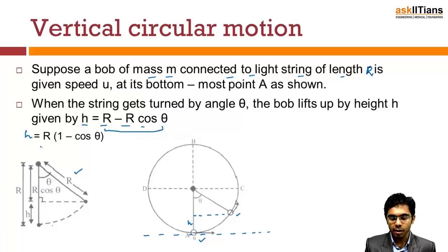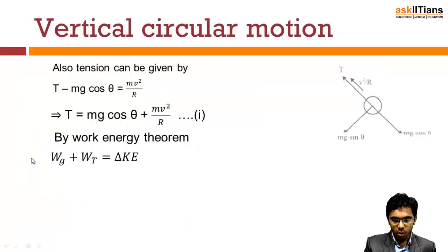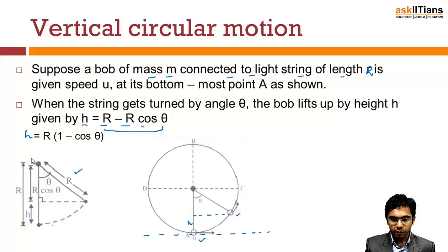Now in this figure, after reaching the final position, if we make the free body diagram, tension will be along this direction and mg will be in the vertical downward direction. If we take the components of mg, this will be mg cos θ along the radial direction, and along the tangent it will be mg sin θ. This is the free body diagram.